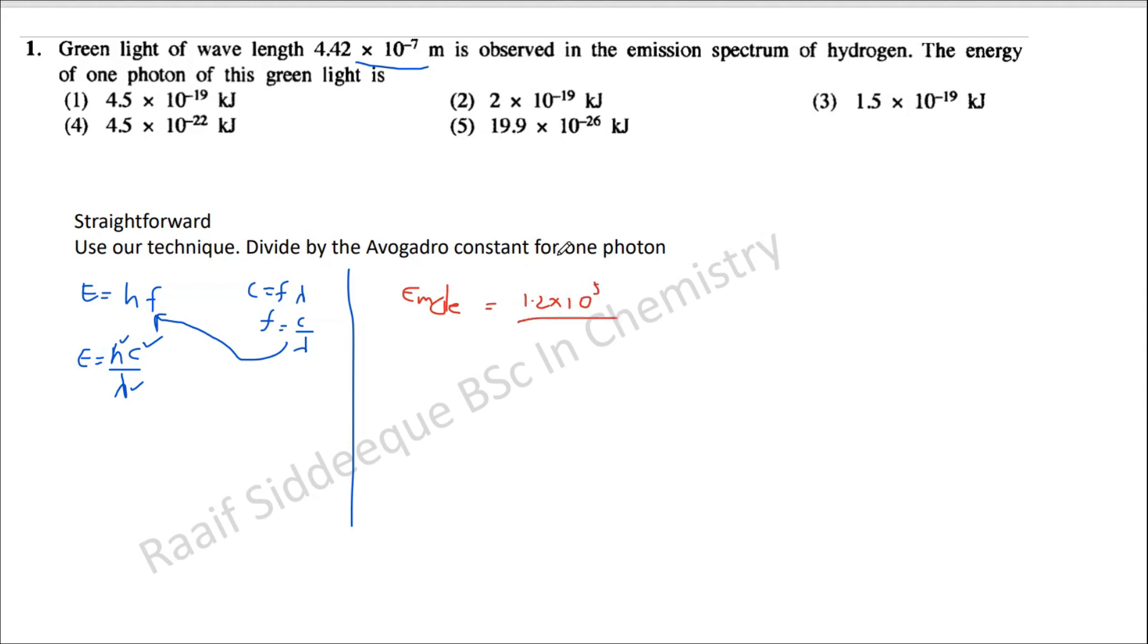Divided by the wavelength in nanometers. Here the wavelength is given in meters, so if you want to convert this into nanometer this will be 10 to the power 9, so this will be multiplied by 10 to the power 9 which is 442. This is energy of a mole of photon according to our method. So if you want to find energy of a single photon...